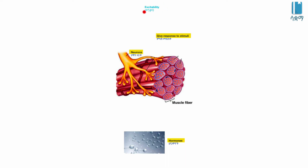Excitability. Excitability is the ability of muscle to give response to stimuli which comes from motor neurons and hormones.